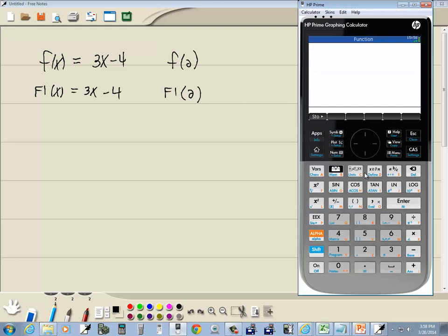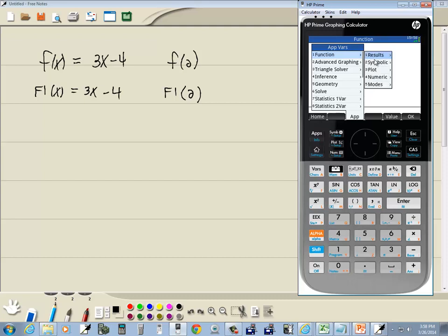Now we want to access f1, and we do that under the bars option. If I choose bars, there's function and different ones. If I press right arrow, you see results, symbolic. Come down to symbolic. You got f7 through f0.